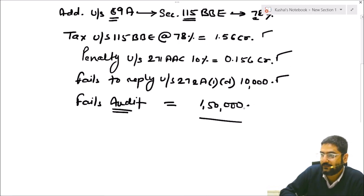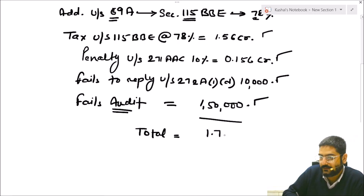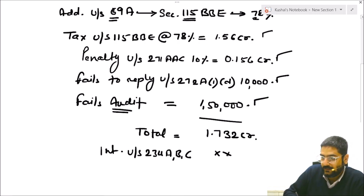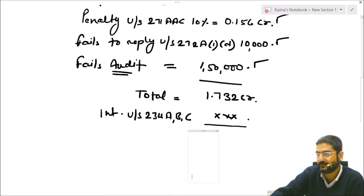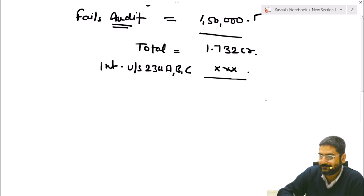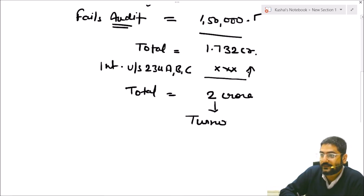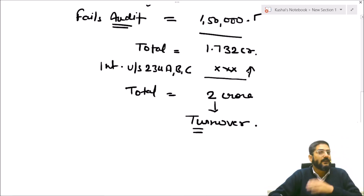If you total all this tax and these penalties, the total comes to ₹1.732 crores. But the story still does not end here — you also have to pay interest under Section 234A, 234B, and 234C, the amount of which depends on the delay involved. If the delay is more, the interest will be higher. Approximately, adding interest under Sections 234A, B, and C, the total may come closer to ₹2 crores.